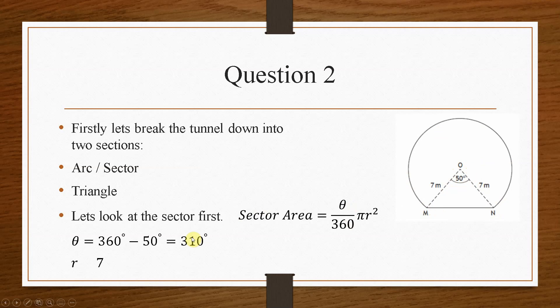Now, that's our theta, and we're told that the radius was 7. So we just pop the numbers in, pop it into the calculator, and we get a value of 132.5 meters squared. That is for the area of the sector.